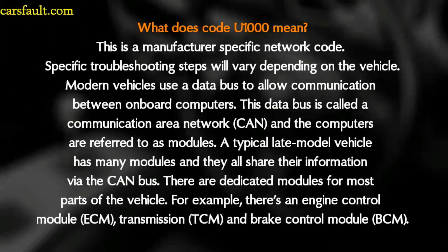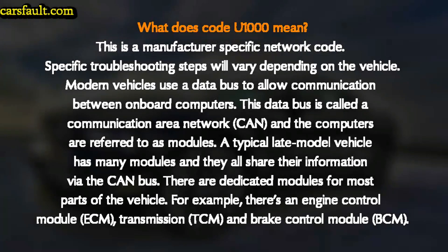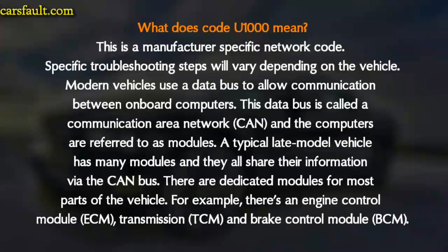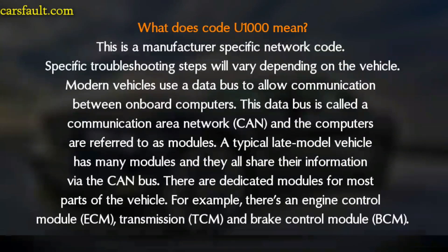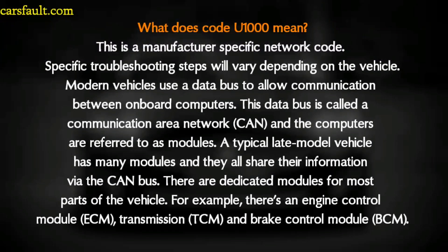So let's get started. What does the code U1000 mean? This is a manufacturer-specific network code, and troubleshooting steps will vary depending on the vehicle. Modern vehicles use a data bus to allow communication between onboard computers. This data bus is called a Controller Area Network, or CAN. The computers are referred to as modules, and a typical late-model vehicle has many modules that all share information via the CAN bus.